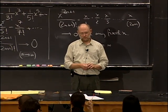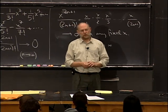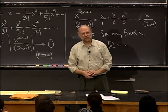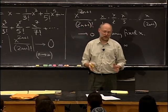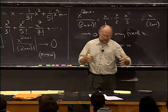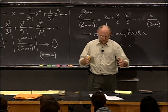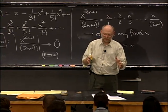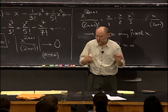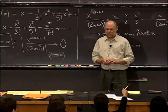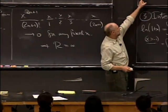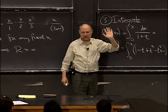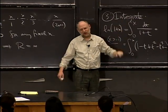A student asked why the radius of convergence of a product is the smaller of the two radii. The basic answer is you can't expect it to be bigger than the smaller one, because the power series only gives you information inside that range. In the case of x times sin(x), both radii of convergence are infinity, so you get infinity.